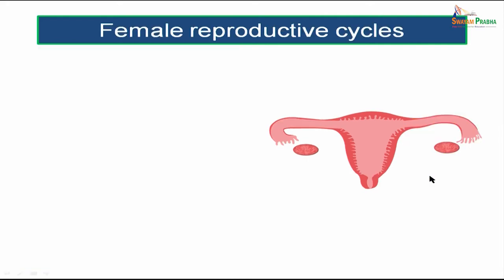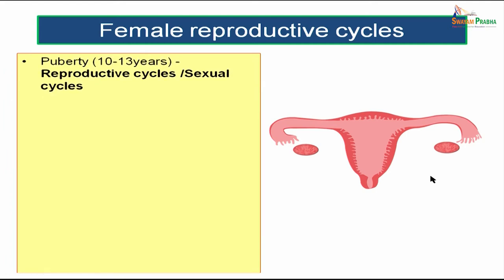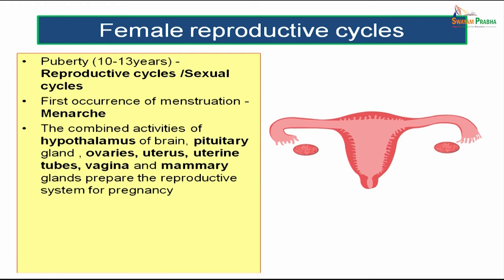Now we will move on to the female reproductive cycles. The reproductive cycles start at puberty, roughly 10 to 13 years of age. The first occurrence of menstruation is known as menarche. The reproductive system functions by the combined activities of the hypothalamus, pituitary gland, ovaries, uterus, uterine tubes, vagina, and mammary glands — making it a hormonally controlled system.